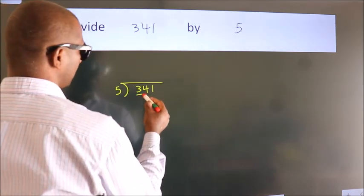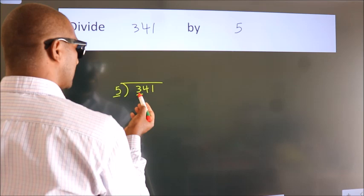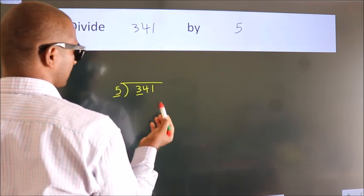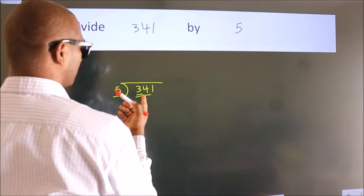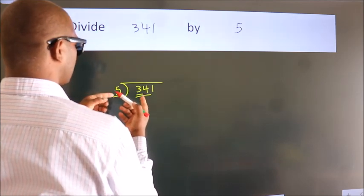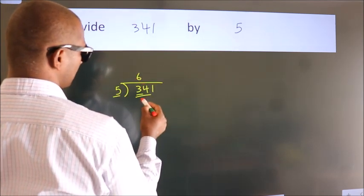Here we have 3, here 5. 3 is smaller than 5, so we should take 2 numbers, 34. A number close to 34 in the 5 table is 5 times 6, which is 30.